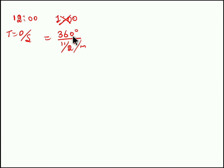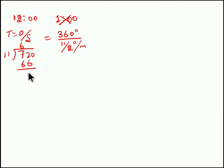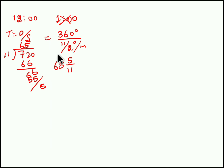So solving 360 divided by 11/2 degrees per minute, we get 720/11. That gives us 65 with remainder 5, so we write this in mixed fraction format as 65 and 5/11 minutes. This means for every 65 5/11 minutes, both the needles of the clock coincide.